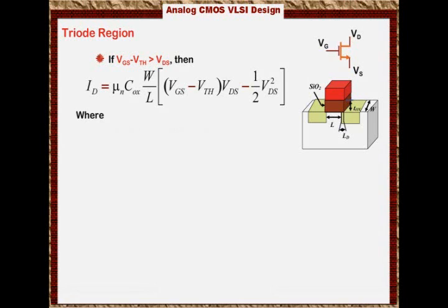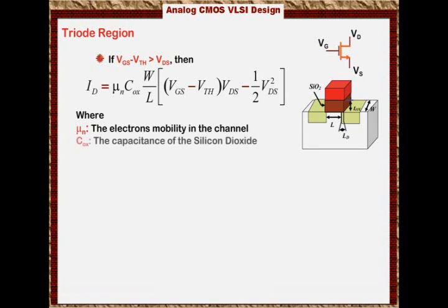Let me talk about these parameters. Mu of N is called the electron's mobility in the channel. That channel we created has an electron mobility in it.